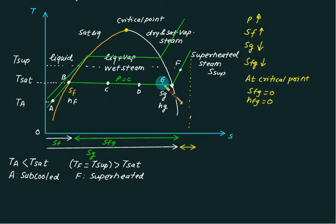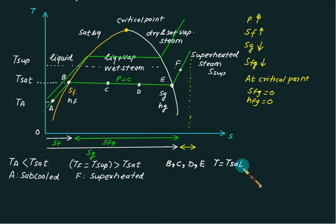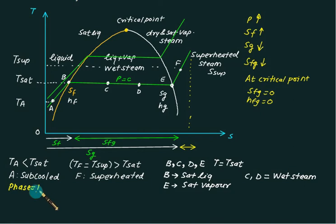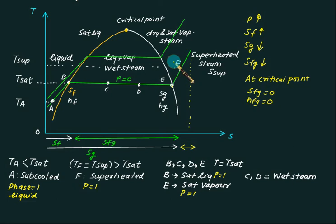If the temperature is below TSH, we use the term subcooled; if above TSH, we use the term superheated. Points B, C, D, and E are all at the same temperature as TSH, the saturation temperature. Point B is called saturated liquid, point E is called dry and saturated vapor, and points C and D represent wet steam — a mixture of water and vapor. From A to B we have only one phase (liquid); at point B it is purely water (one phase); at point E it is purely vapor (one phase); at point F it is also single-phase vapor. At C and D we have two phases: water and steam.